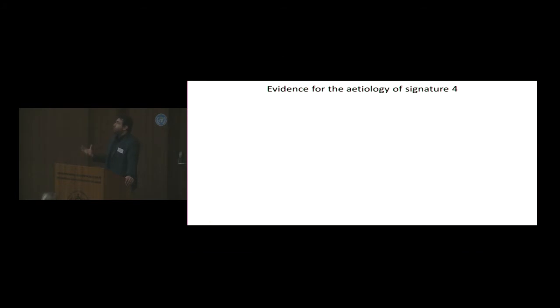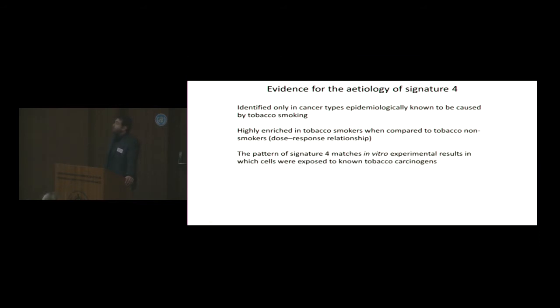The type of evidence that we use to assign an etiology for a mutational signature: in the case of tobacco smoking, it's found only in cancer types epidemiologically known to be caused by smoking. It's highly enriched in tobacco smokers compared to non-smokers. There is also a dose response. The more you smoke, the more mutations you get. I didn't show you that.